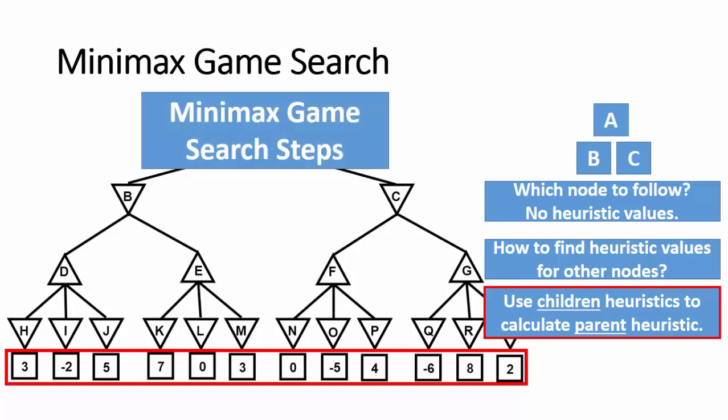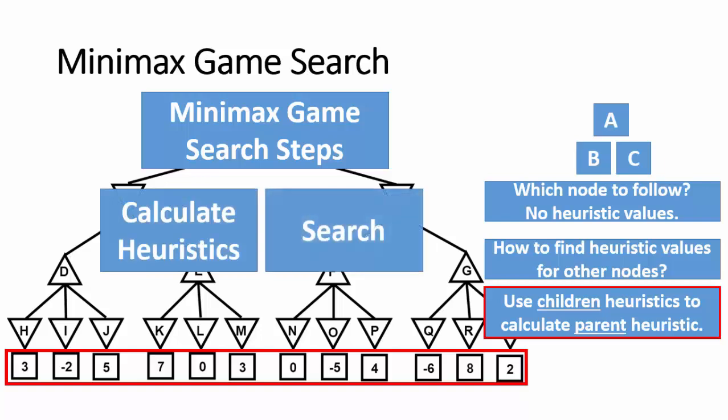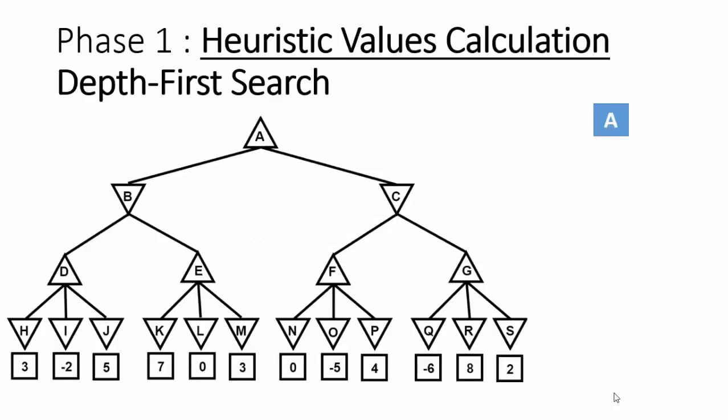There are two steps in Minimax game search: first, heuristic value calculation, and second, making the search. Heuristic value calculation for Minimax uses depth-first search to explore all nodes in the tree. The motivations for using depth-first search are: first, it explores all nodes in the tree; second, it explores the deepest level first, which is a requirement because heuristic values are only available at leaf nodes — the deepest level. So depth-first search is an optimal solution for calculating heuristic values in Minimax.